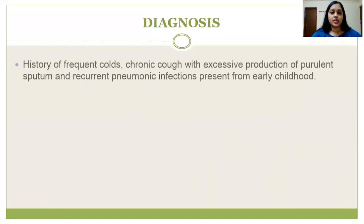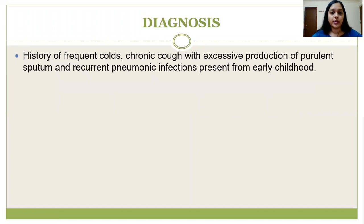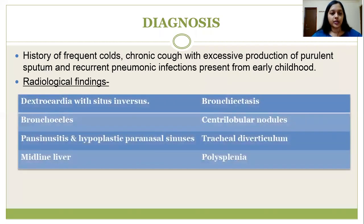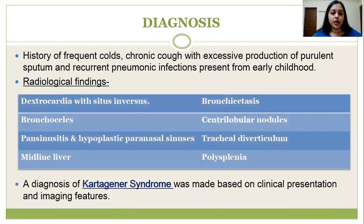Coming to the diagnosis: the patient presented with history of frequent colds, chronic cough with expectoration, and recurrent pulmonary infections from early childhood. The radiological findings in our case are dextrocardia with situs inversus, bronchiectasis, bronchoceles, centrilobular nodules, pan-sinusitis and hypoplastic paranasal sinuses, tracheal diverticulum, midline liver, and polysplenia. A diagnosis of Kartagener's syndrome was made based on the clinical presentation and imaging features.